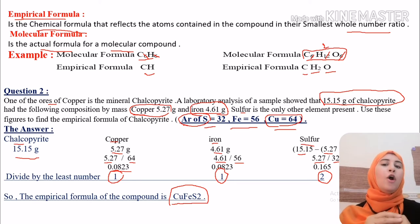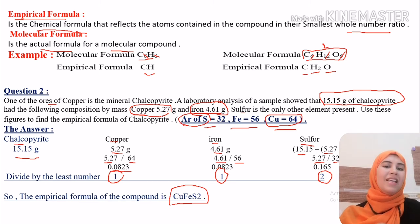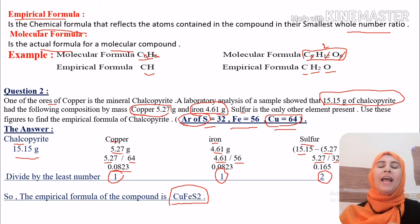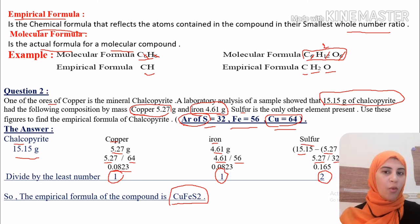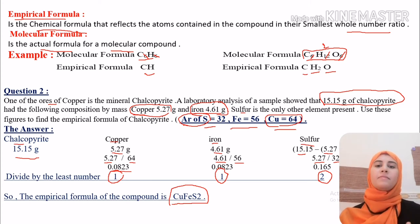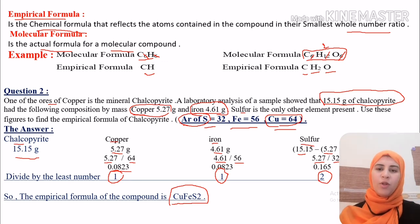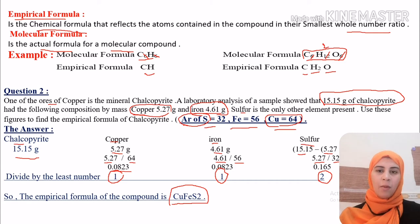That is the empirical formula — the simplest formula indicating the ratio of each element in the compound. It can also be used to calculate the molecular formula using the relationship between empirical and molecular formula.